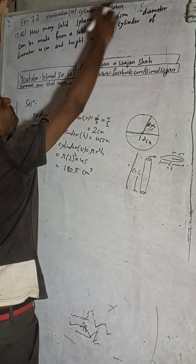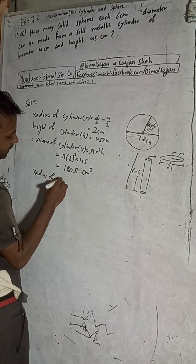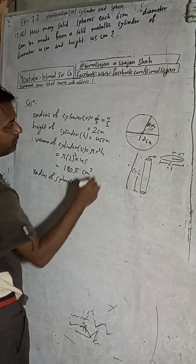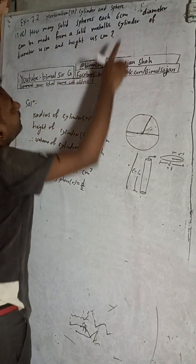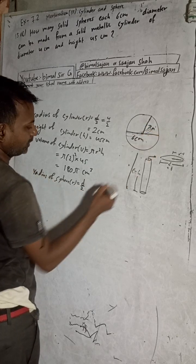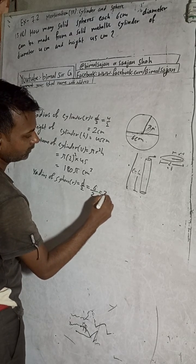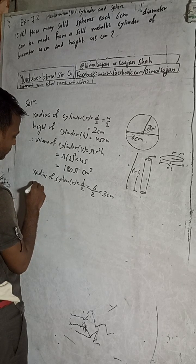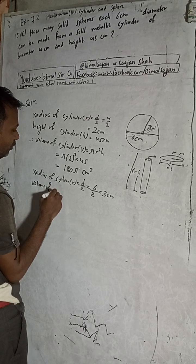Now, the diameter of a sphere is given as 6 cm, so the radius of the sphere is d/2 = 6/2 = 3 cm.